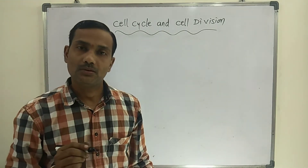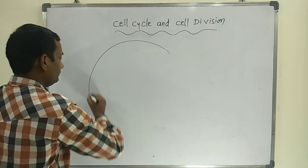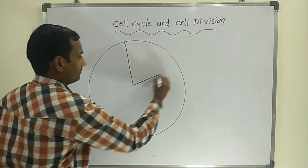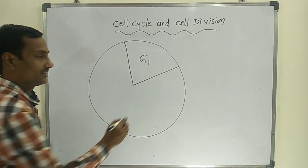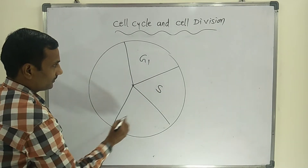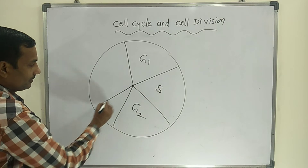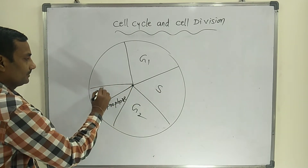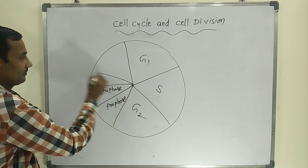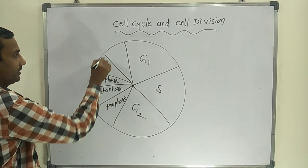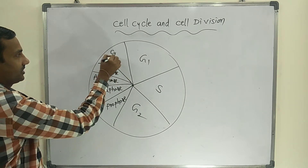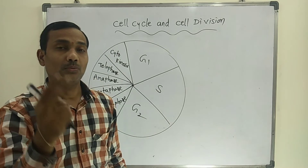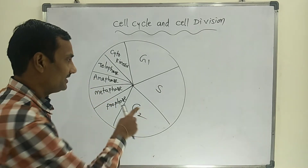Here is the diagrammatic view of the total entire cell cycle. This is G1 — the first sub-phase of interphase — then S phase, G2 phase, followed by prophase, metaphase, anaphase, telophase, and cytokinesis. These represent the two major phases: interphase and M phase.